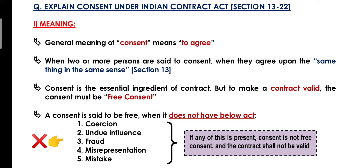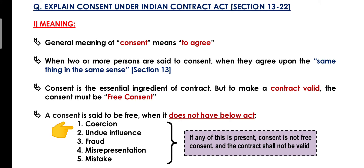The five vitiating factors are: number one, coercion; two, undue influence; three, fraud; fourth, misrepresentation; and fifth is mistake. If any of these are present, consent is not free and the contract shall not be valid. Aaj ki is video mein hum doh concepts — coercion and undue influence — ko detail mein, examples and case laws ke saath cover karenge.